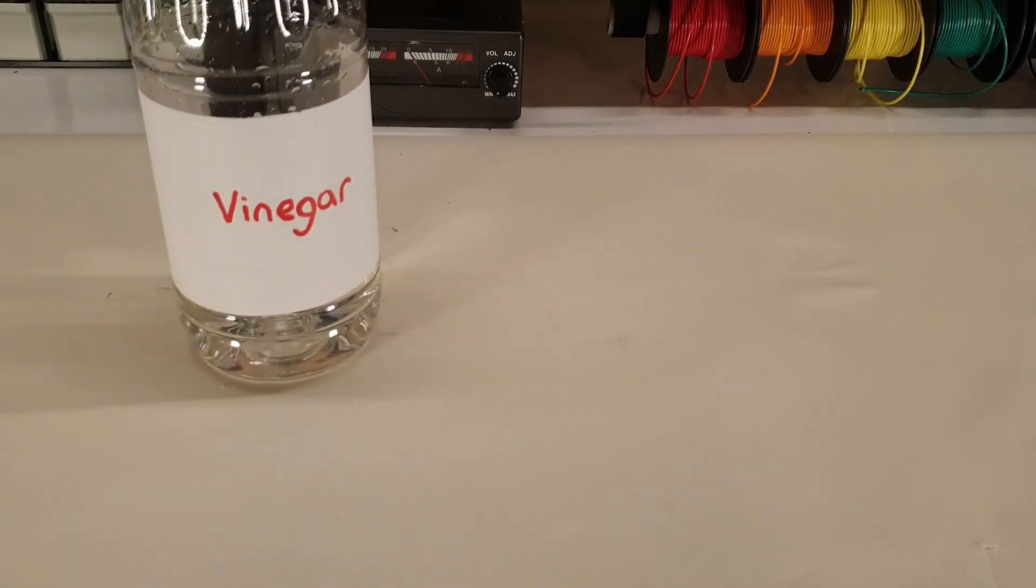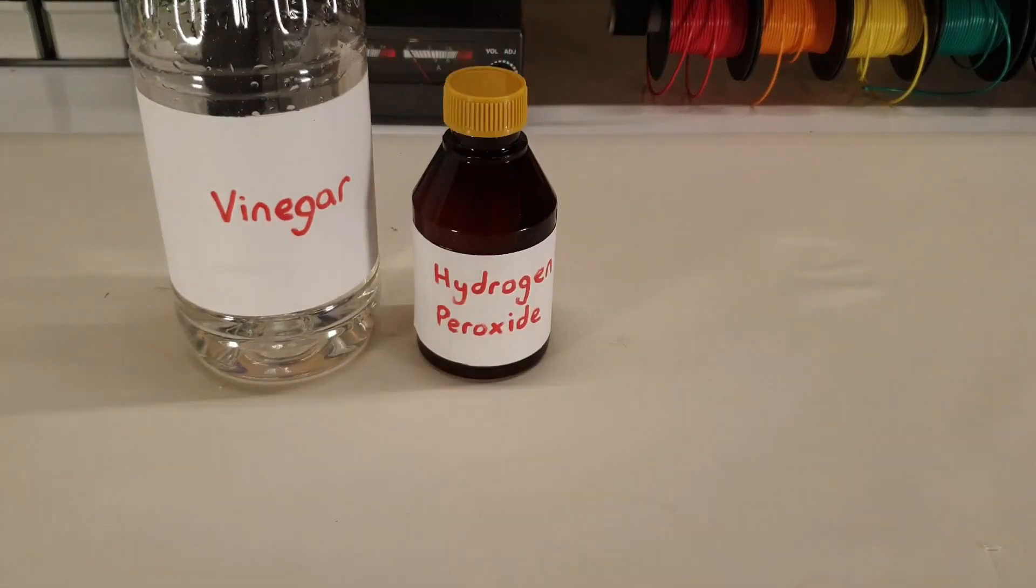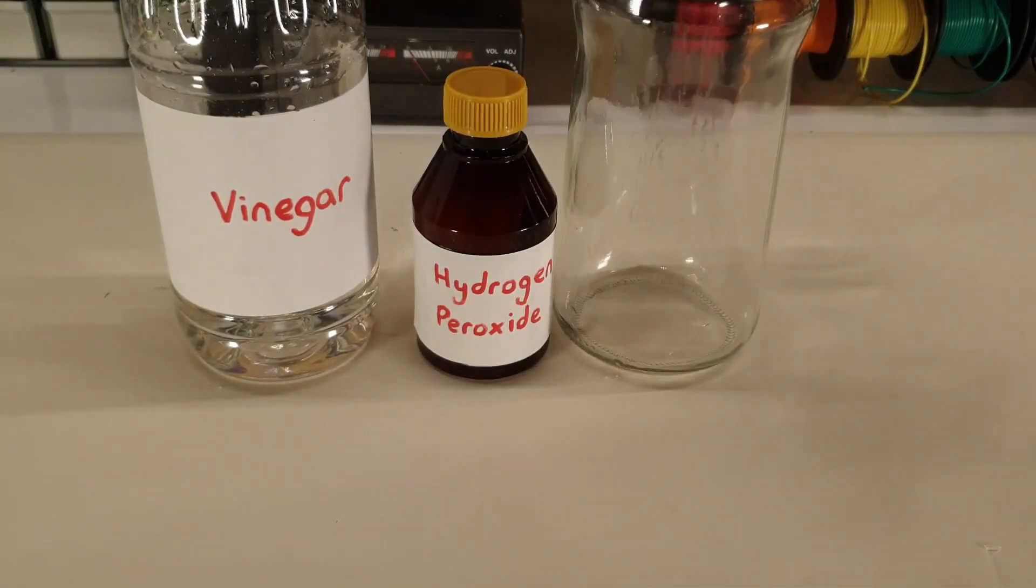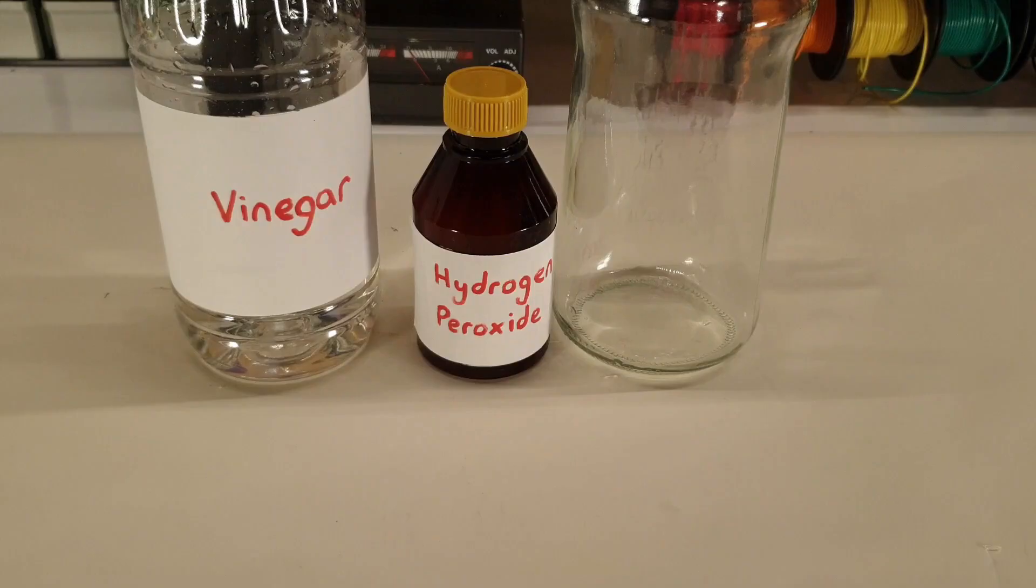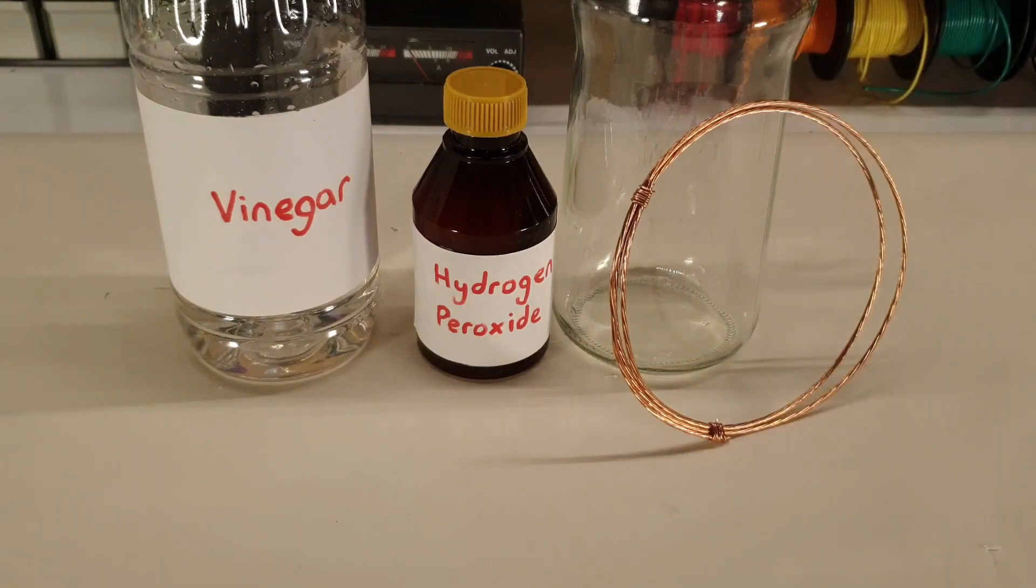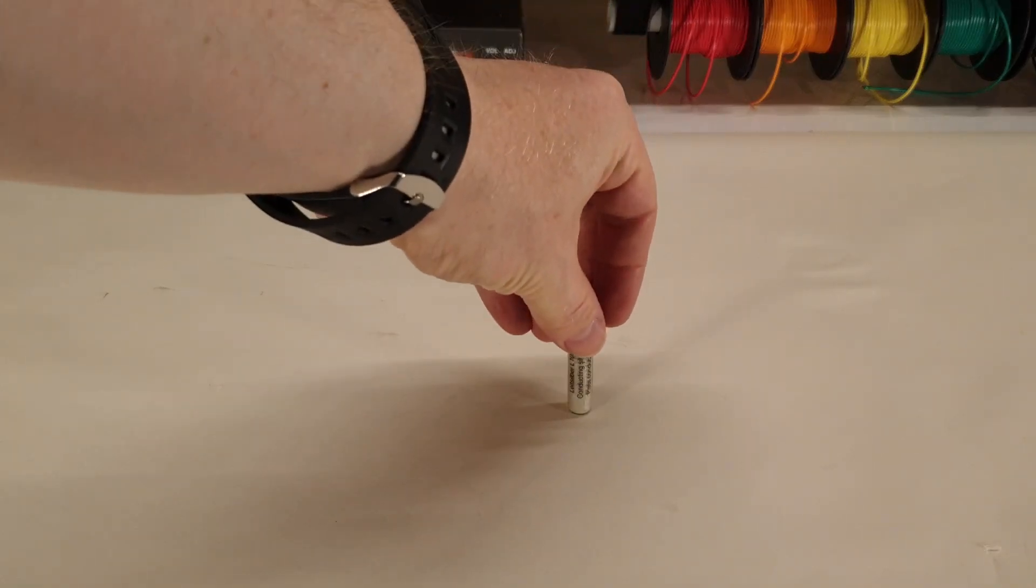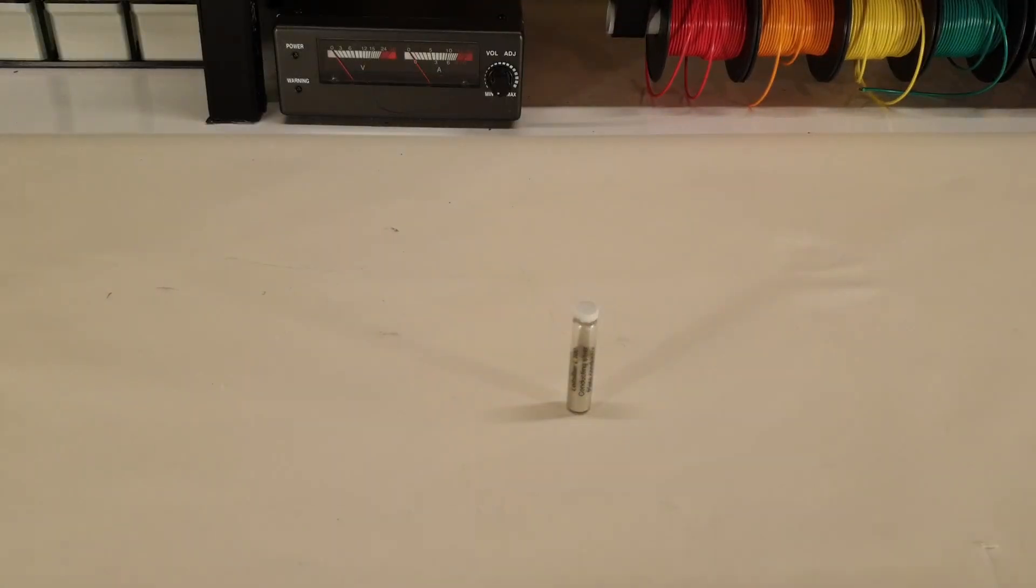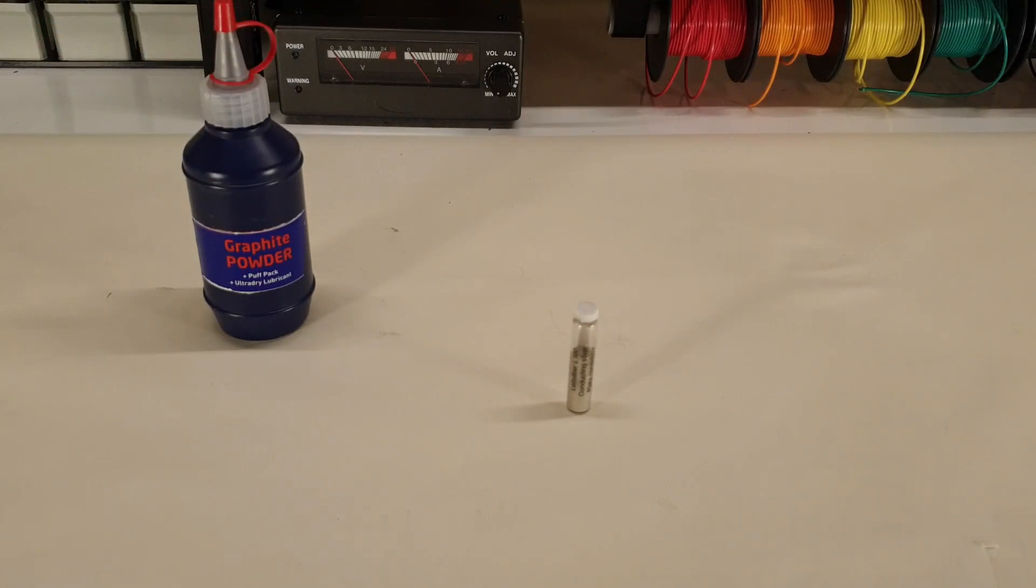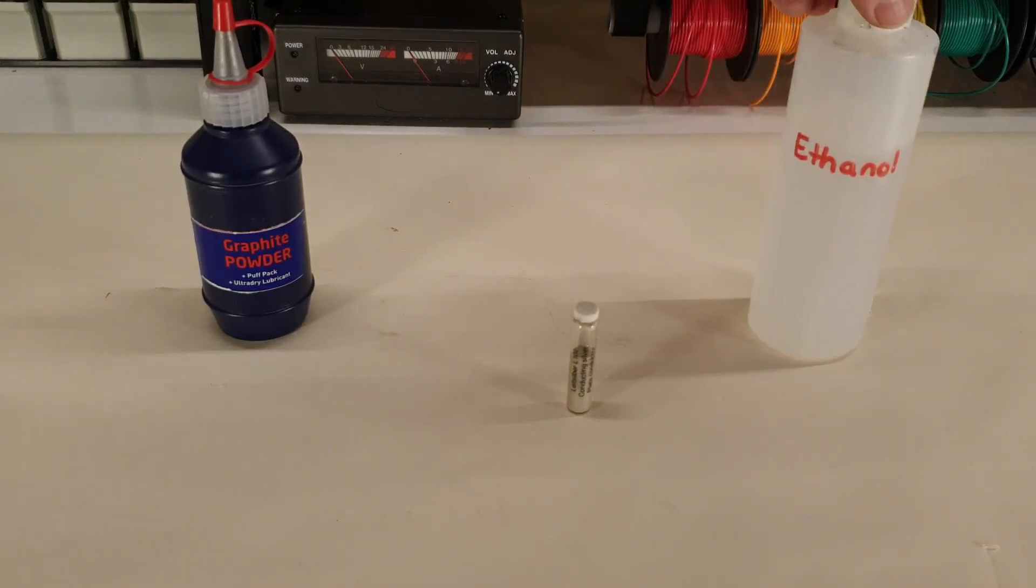For the electroplating process you're going to need some strong white vinegar, some hydrogen peroxide, some scrap copper, and some batteries or a benchtop power supply that you can adjust the voltage of. Also, for coating your 3D printed object you're going to need some graphite powder and some alcohol, or some conductive paint.